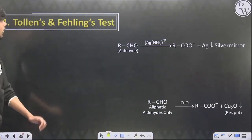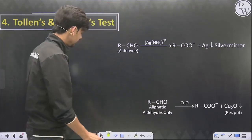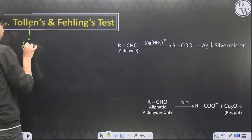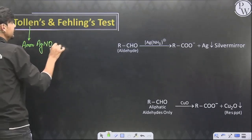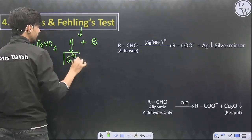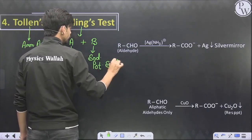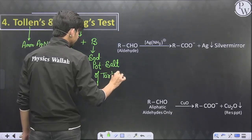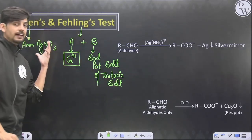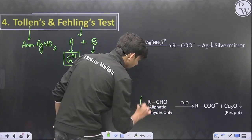Tollens' and Fehling's tests are the two important tests for aldehydes and ketones; both are mild oxidizing agents. Tollens' reagent is ammoniacal silver nitrate solution. Fehling's reagent is a mixture of two solutions: Fehling's A contains ammoniacal copper sulfate (Cu²⁺ ions), and Fehling's B contains sodium potassium salt of tartaric acid, commonly known as Rochelle salt.